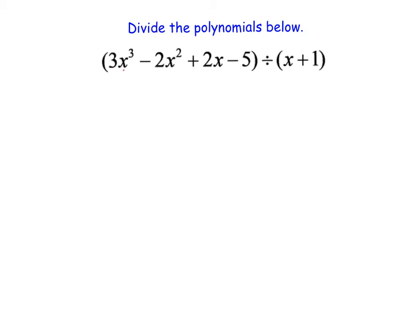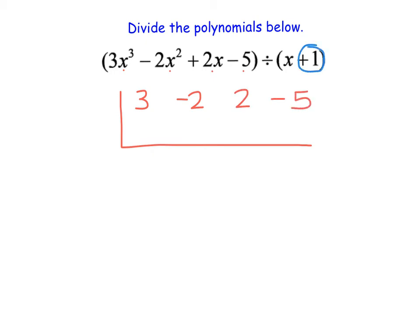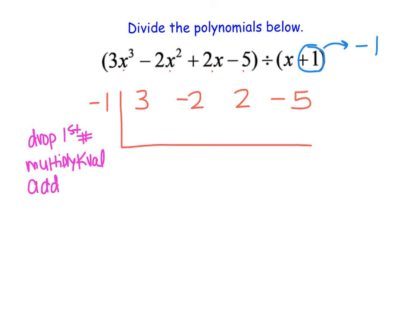Let's try another example. We notice we have x cubed, x squared, x, and a constant, so we don't need to add any missing terms. We set up synthetic division with our box and put the coefficients in descending order: 3, negative 2, 2, and negative 5. Our k value is the opposite of what's in the divisor, so our k value becomes negative 1. We start by dropping the first number, then multiply by the k value, add to the next number, and repeat.